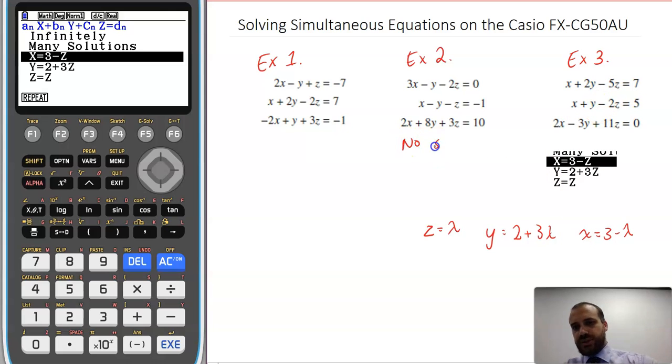The answer to that one was no solution, and I forget what this one was, but it was just three nice, neat numbers. All right, that's solving simultaneous equations on the Casio. Really great if you've gone through a big lot of Gaussian elimination, and you don't know if you got the right answer. You can check it by looking at it.